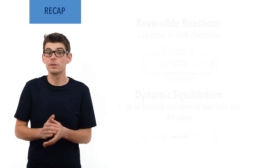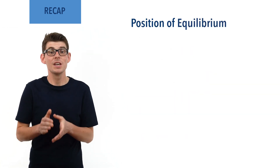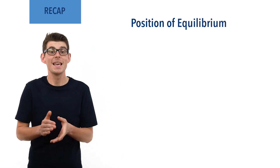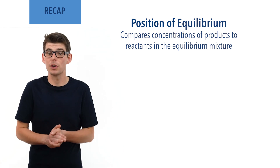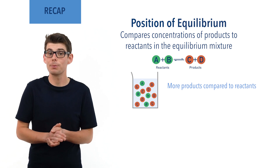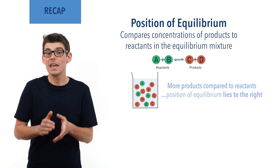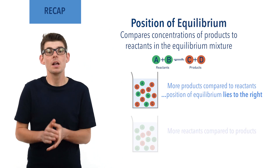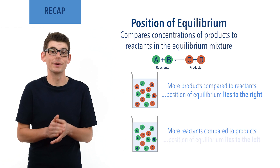Positions of equilibrium describe how the concentrations of products compare to the concentrations of reactants in an equilibrium mixture. If there is a higher concentration of products compared to reactants, the position of equilibrium is said to lie to the right. If there is a higher concentration of reactants compared to products, the position of equilibrium is said to lie to the left.